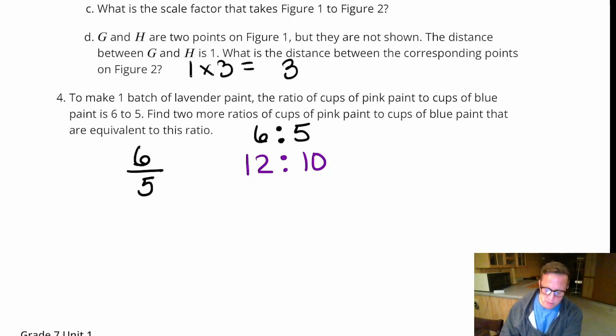If we triple it, we're going to get 18 to 15. You know, if we, I know I don't have to keep going, but if I quadruple it times four, you're going to end up with 24 to 20.